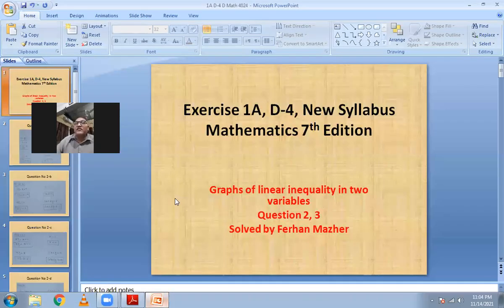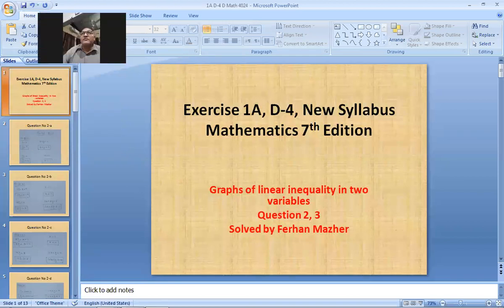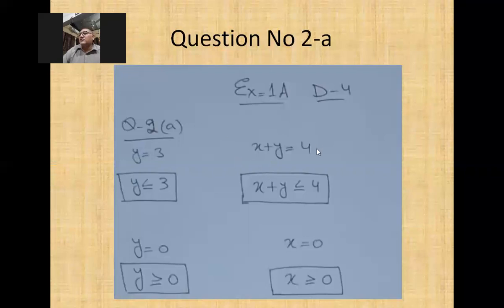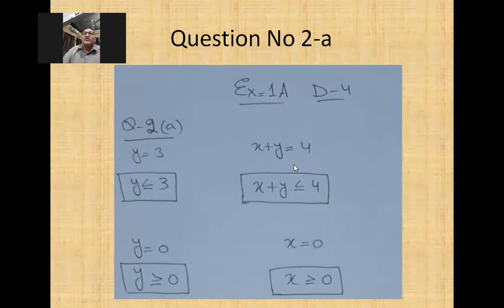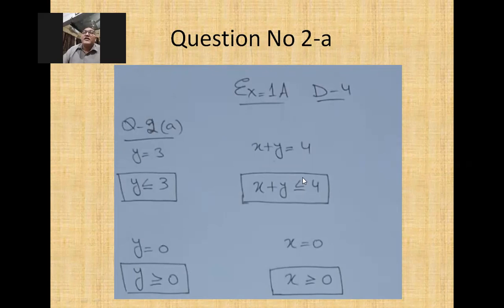The required area is below this line, so the inequality sign's back will be towards y — giving us x + y ≤ 4. That is line number one. The next line is a horizontal line y = 3. Because the required area is below this line, the crocodile's back will be towards y, so we write y ≤ 3. Since it's a continuous line, we also include the equal sign.